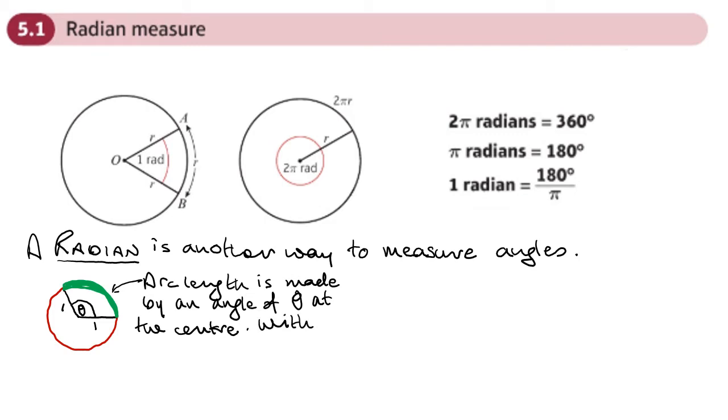With radians, we call the arc length equal to theta. This is for a radius of one. And that's really useful. Let's call this arc length the same as this angle at the centre for a radius of one. It actually doesn't really matter later on what the radius is. What's important is that for a particular angle, it will make a particular arc length.